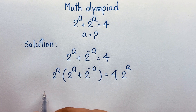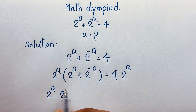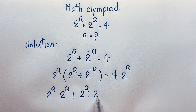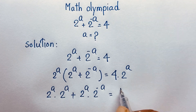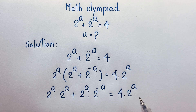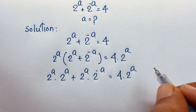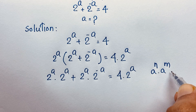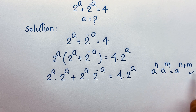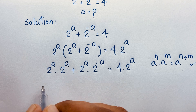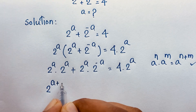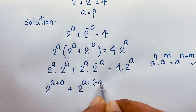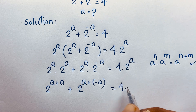Expanding: 2 to the power a times 2 to the power a, plus 2 to the power a times 2 to the power minus a, equals 4 times 2 to the power a. According to the exponential product formula, we apply the rule a to the power m times a to the power n equals a to the power m plus n.